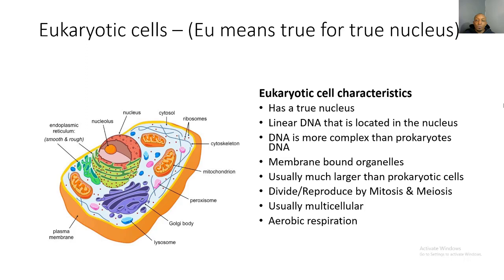Now let's look at eukaryotic cells. 'Eu' means true, for a true nucleus, so eukaryotic cells do have a true nucleus — that's the biggest difference between a prokaryotic and a eukaryotic cell. Eukaryotic cells have a true nucleus contained in the middle of the cell, and they have linear DNA located in the nucleus that is neatly organized.